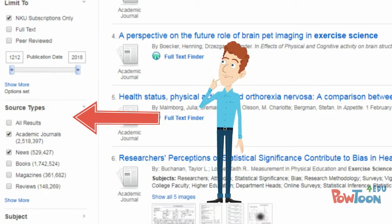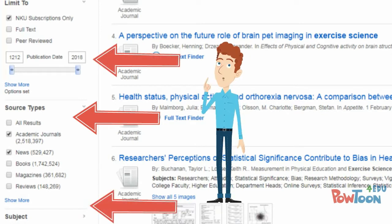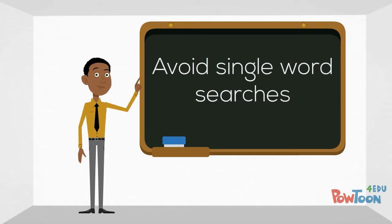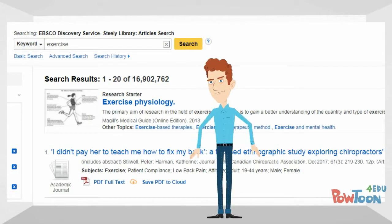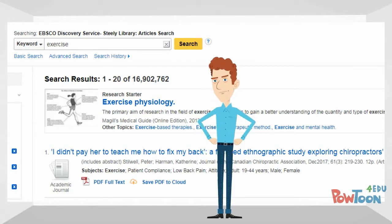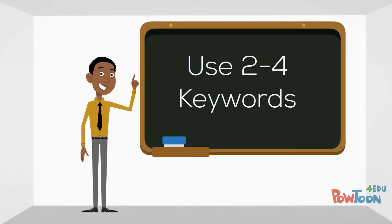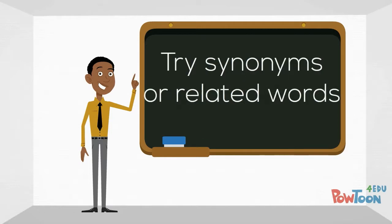In addition to source type, he noticed many other different options for narrowing his search. For example, he could limit by date range or by subject. The librarian said that another way to make a search more effective was to be more careful with his search terms. He explained that a single word search is usually not effective because he would get way too many results. However, he should also not enter a complete sentence. Instead, he should select two to four keywords that represent his topic. If those words did not work, he could try synonyms or related terms.